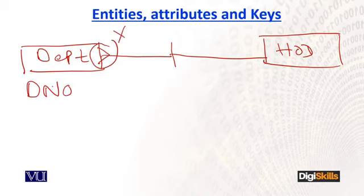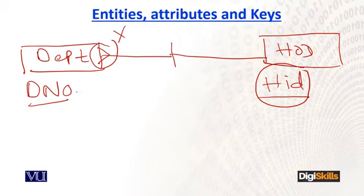One department has one HOD, and one HOD has one department. The greater-than sign is not there. Now let's say that the Department attribute is, for example, department number (DNO), and the HOD attribute is, for example, HID.